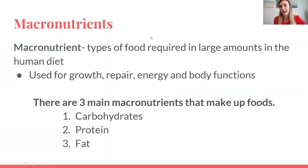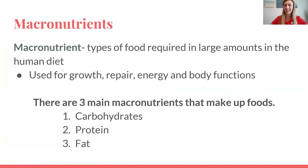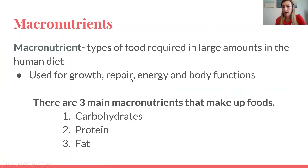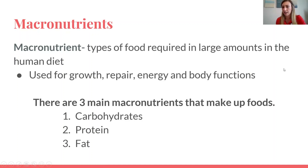Macronutrients — you may have heard this term before. Macronutrients is just a fancy way to say the types of food we require in large amounts, which is what macro means. These are used by the body on a regular basis to help with growth, repair, energy, and overall body function. The three main types we'll discuss are carbohydrates, proteins, and fats — your body uses all of these regularly to perform the functions needed to keep going.